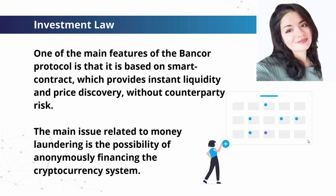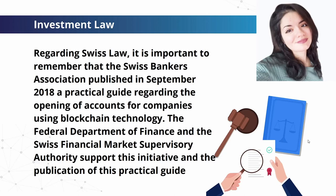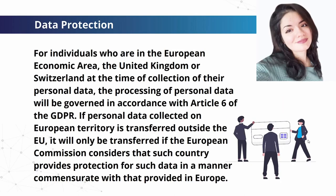Because of this capability, smart tokens do not need to be traded on an exchange to become liquid. The main issue related to money laundering is the possibility of anonymously financing the cryptocurrency system by selling cryptocurrencies privately without going through a controlled exchange. Under Article 305 of the Swiss Criminal Code, there is a definition of money laundering. Regarding Swiss law, the Swiss Bankers Association published in September 2018 a practical guide on opening accounts for companies using blockchain technology, supported by the Federal Department of Finance and the Swiss Financial Market Supervisory Authority (FINMA).